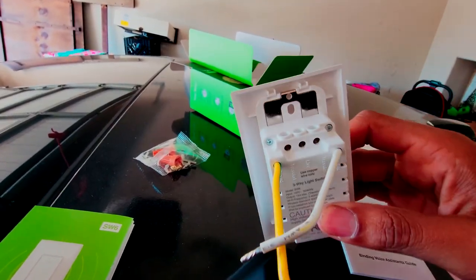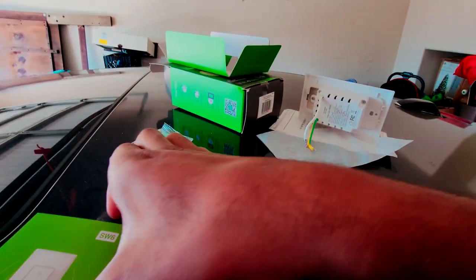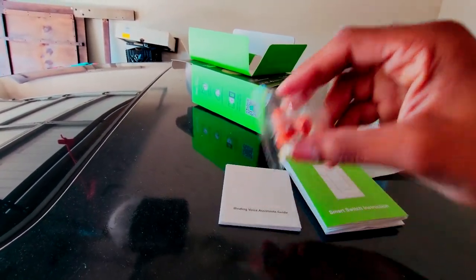The wires are already in there, everything's covered in plastic. You got your guide for the voice assistant, you got the actual guide for installing the light switch, and then you got your mounting screws and your caps.